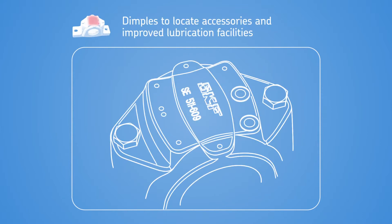Dimples cast into the housing cap indicate where grease fittings and condition monitoring sensors can be mounted for maximum effectiveness. In addition, the hole in the housing cap for relubrication through the center of the bearing is positioned off-center to the shaft axis.